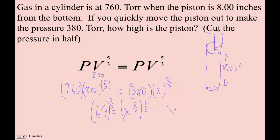And that's going to be x to the 5 times 3 over 3 times 5, which is going to be x. So 64 raised to the 3 divided by 5, 12.1257.